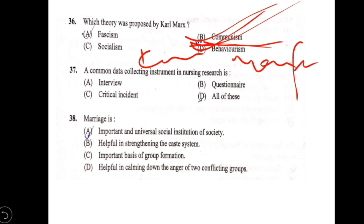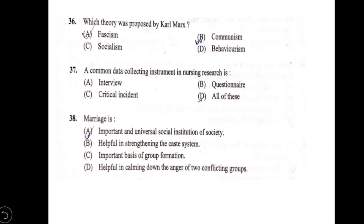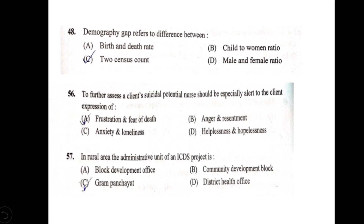Common data collecting instruments in nursing research include interview, questionnaire, and critical incident. Option D, all of the above, is correct. Marriage is described as an important and universal social institution of society. Option A is correct. Demographic gap refers to the difference between birth and death rates. Option A is correct.